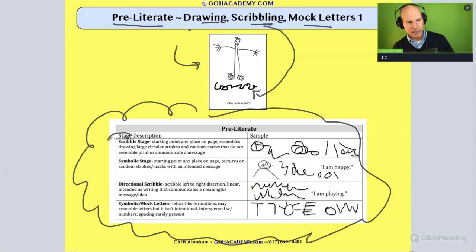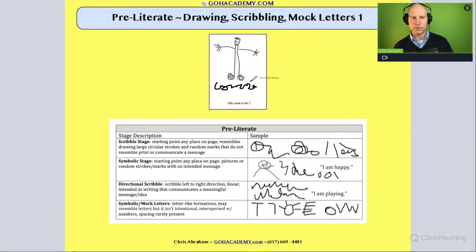Notice in each one of these stages here, we have scribble stage, we have directional scribble. This is going to be a characteristic that you might see. You'll notice a lot of times in activities, the child will draw a picture, they'll write some type of mock letters or scribbles below the picture, and then they'll orally indicate that this scribble represents something. In this picture right here, it's my uncle is tall.